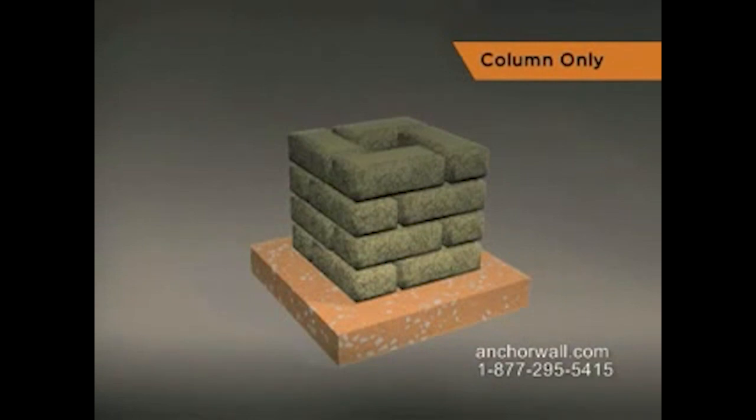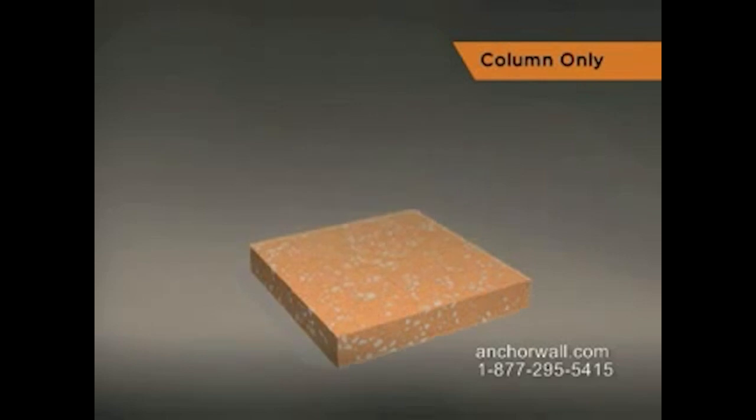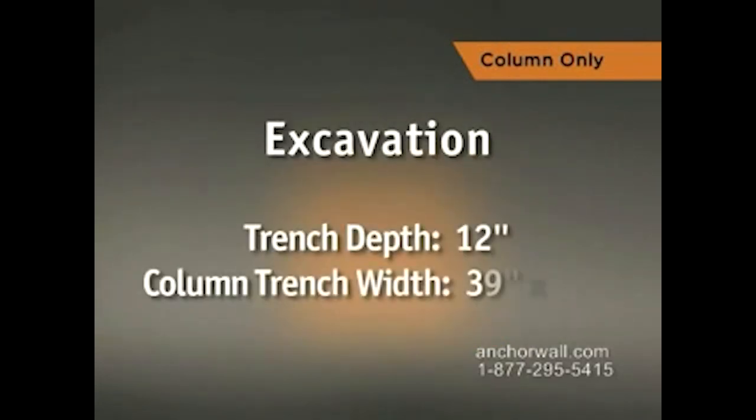This column is built with Highland Stone freestanding wall column units. Start by excavating for the leveling pad. Make this area 12 inches deep and 39 inches square.